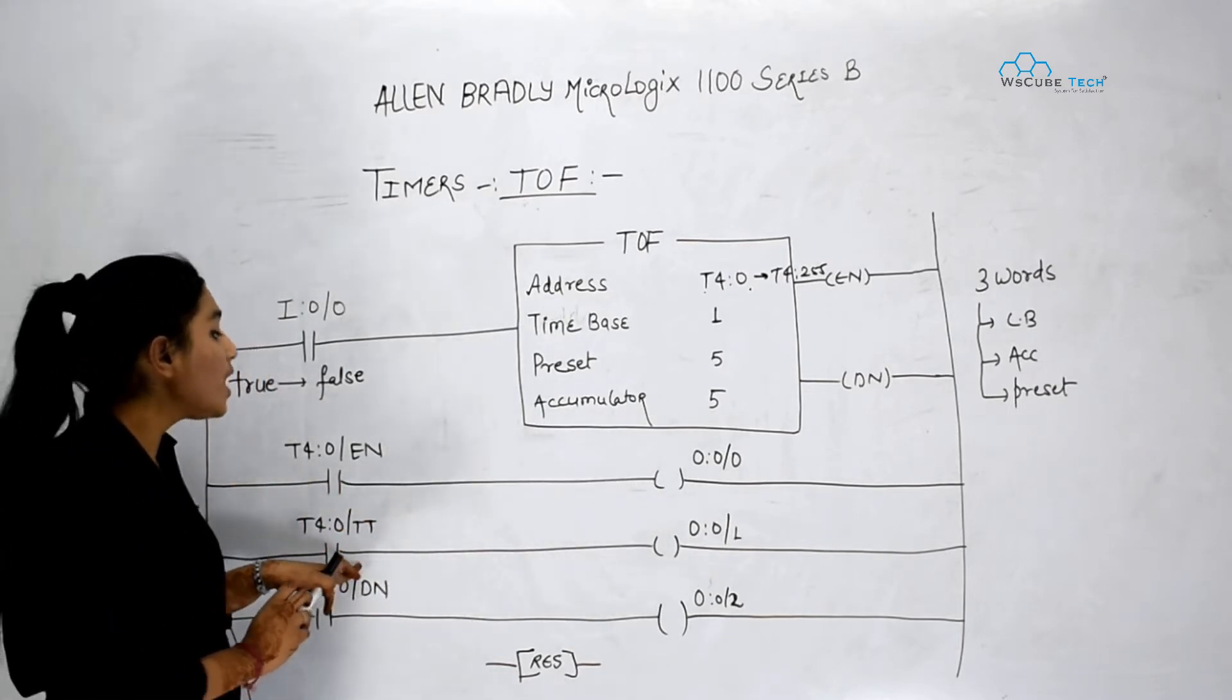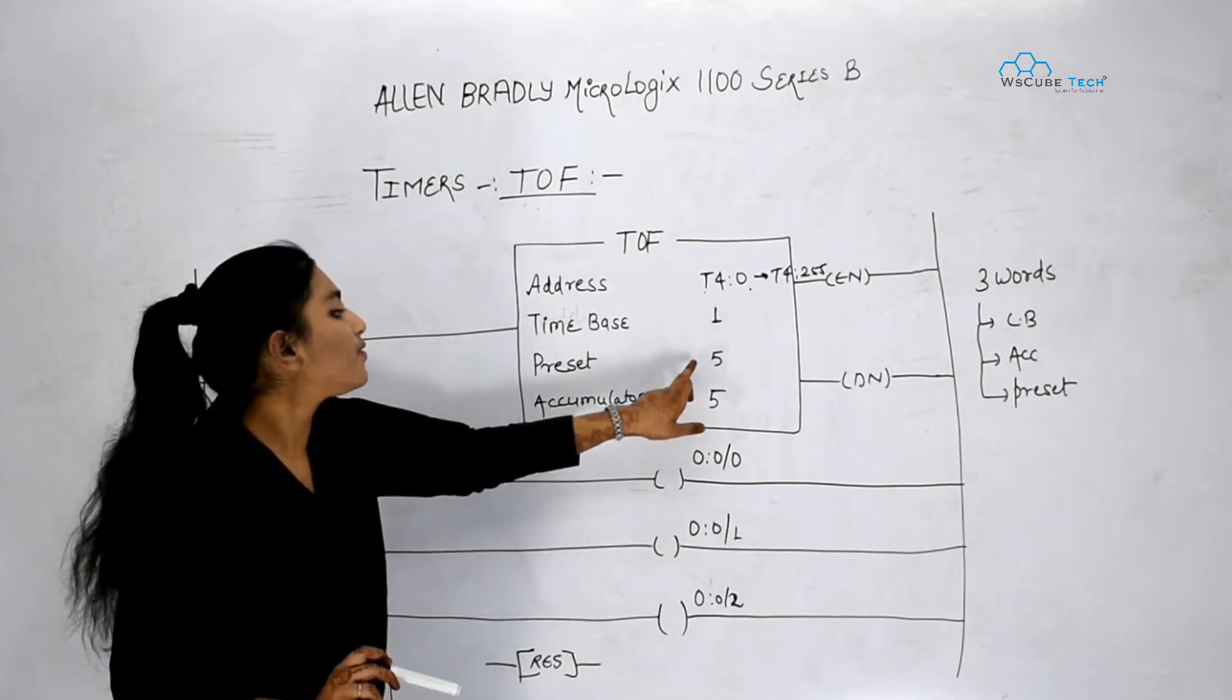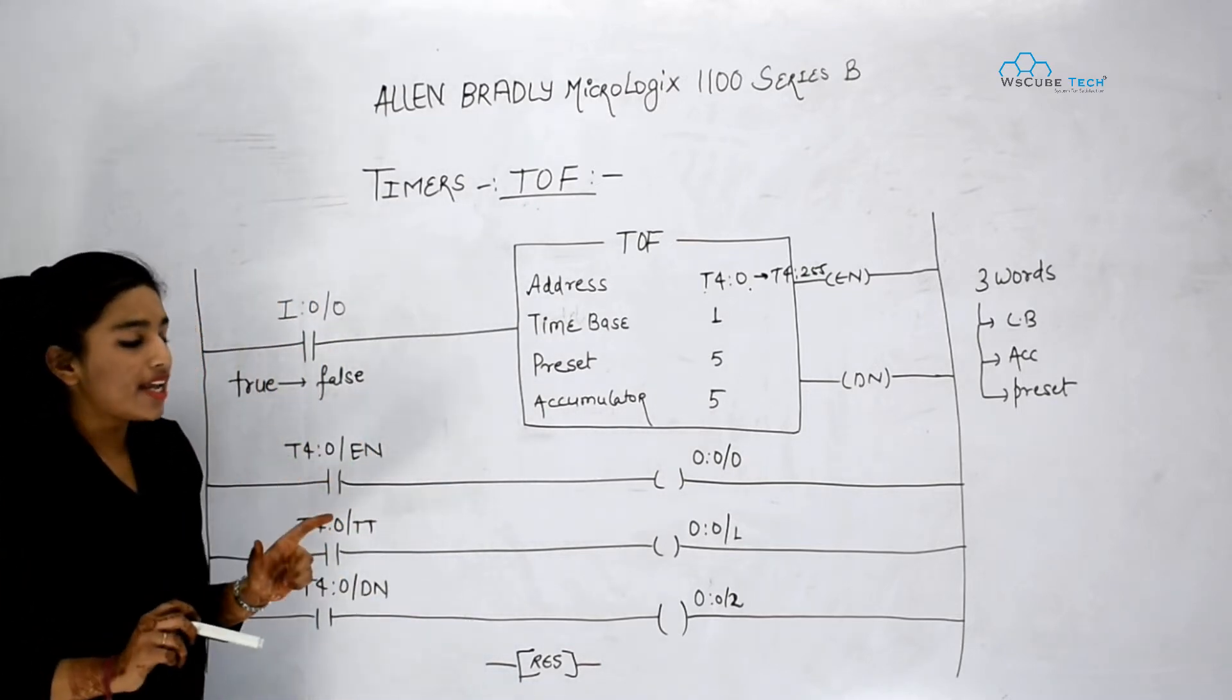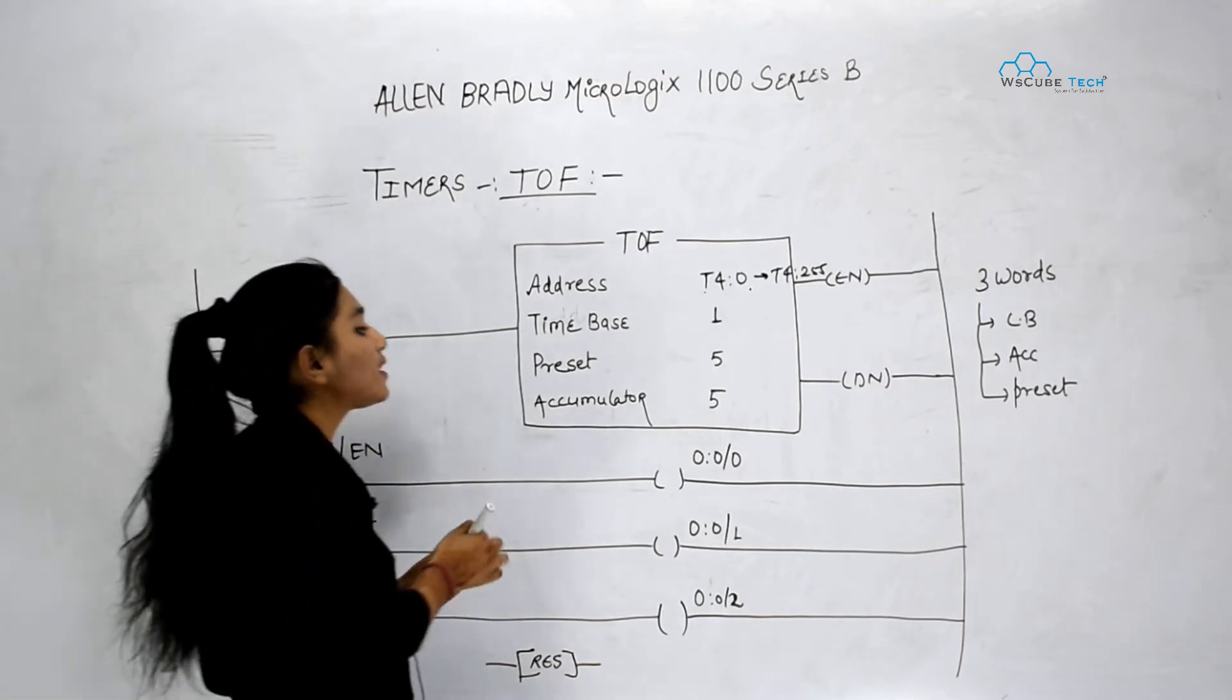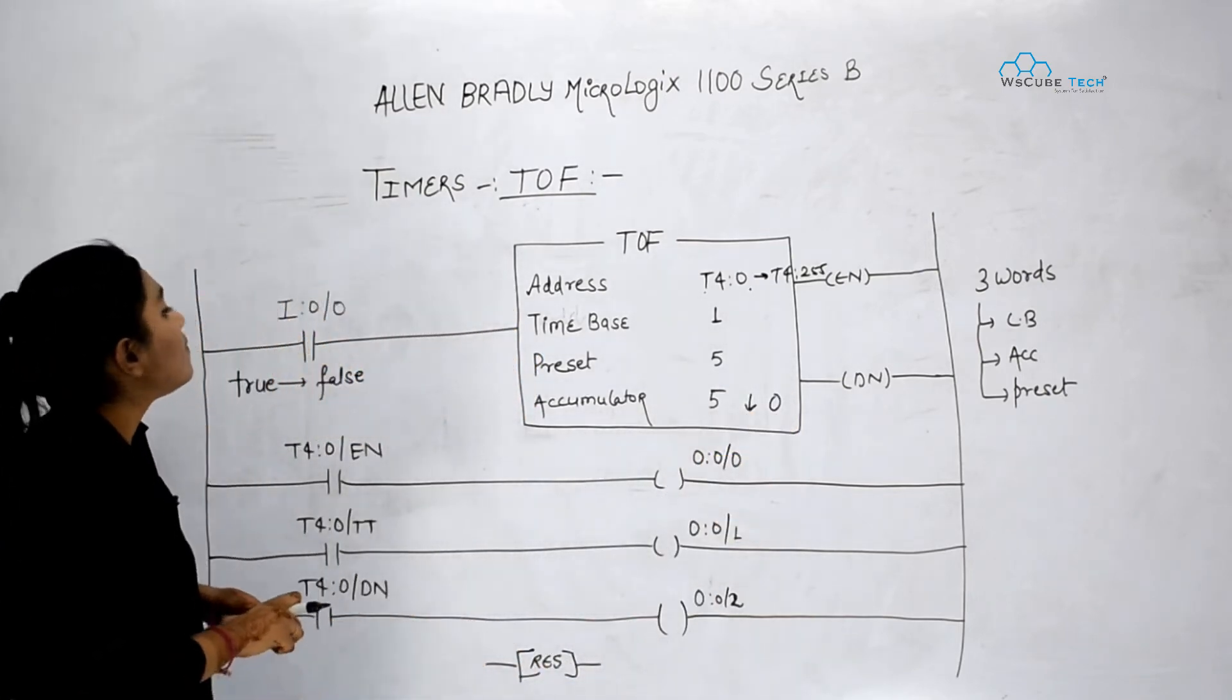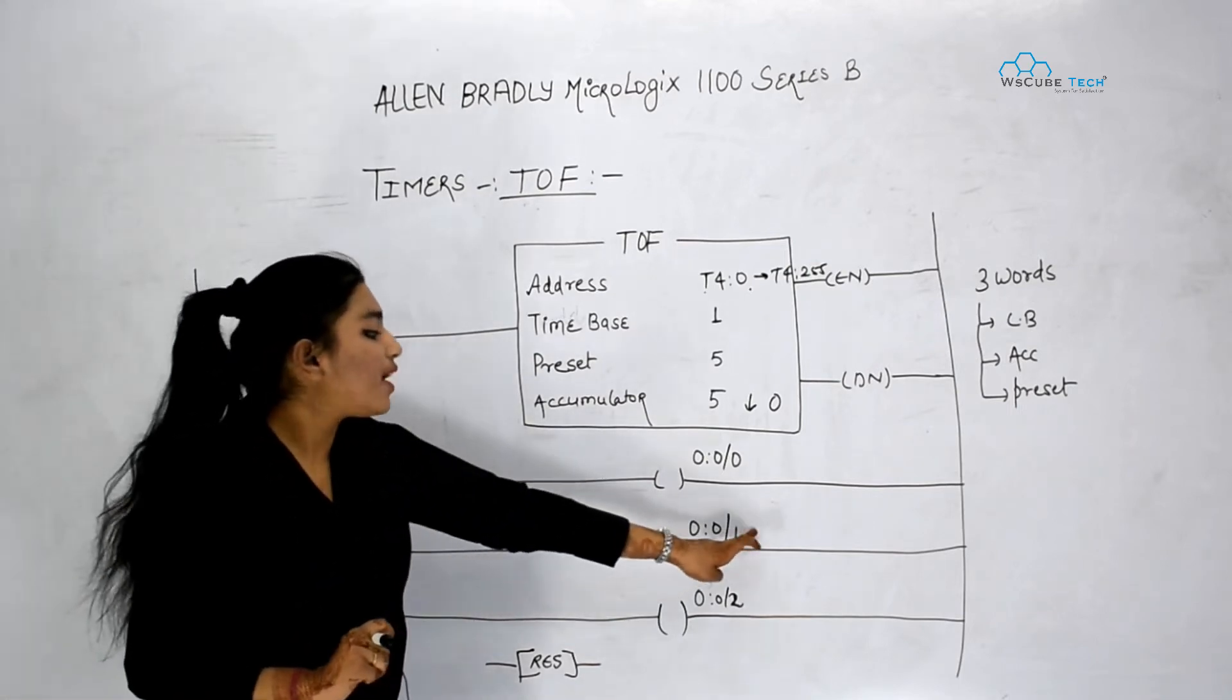Next we have got TT bit. In TT bit when my accumulator value is not equal to preset, it means right now we have written 5 in our preset and 5 here also. So when my rung becomes true to false, when my rung becomes true to false that time only my accumulator's value will start decreasing and it will attain 0 value. So when accumulator value is not equal to preset it means it is decreasing, that time TT bit will be 1 and my output will be there.